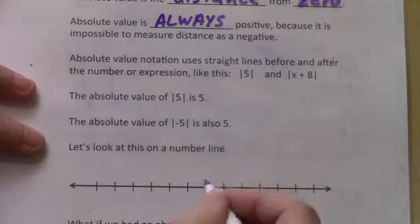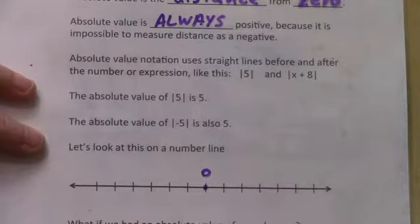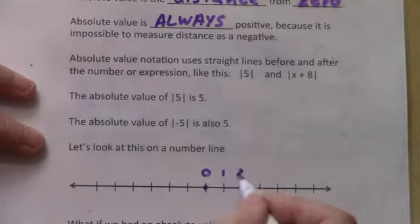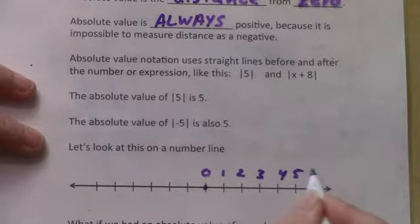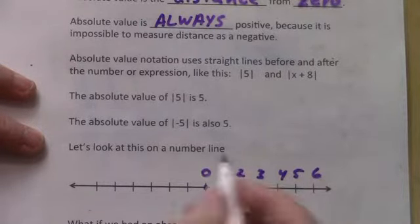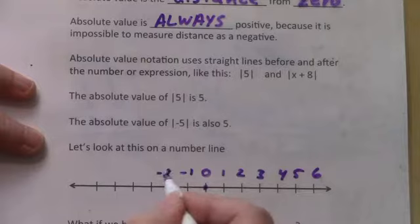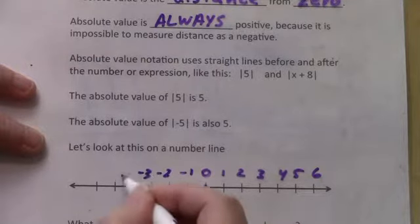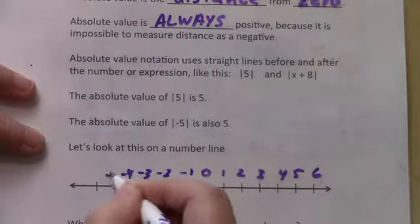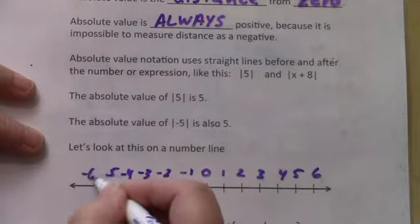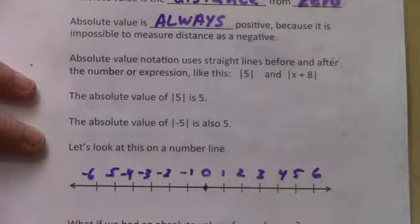Well, if we place zero in the middle of a number line, we know that going right gives us 1, 2, 3, 4, 5, 6, and going left gives us negative 1, negative 2, negative 3, negative 4, negative 5, negative 6.